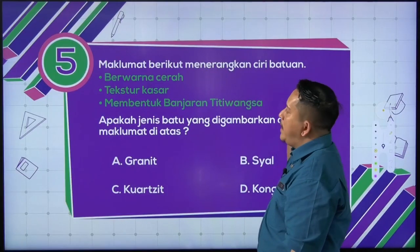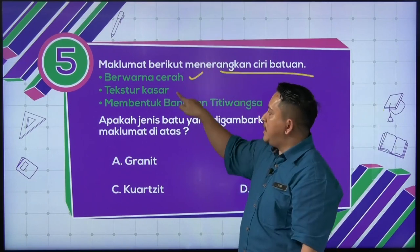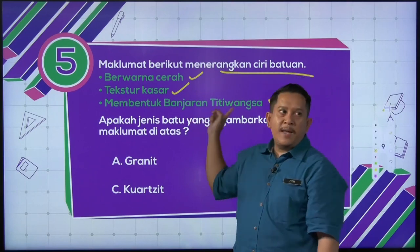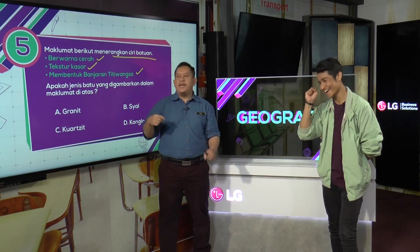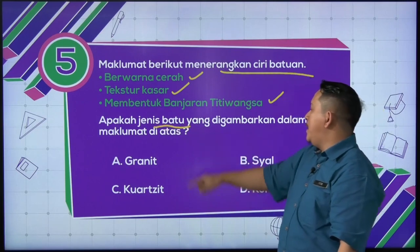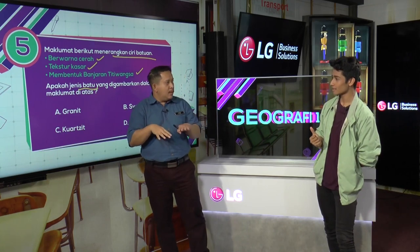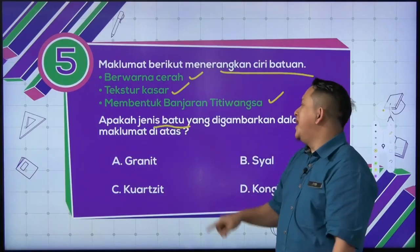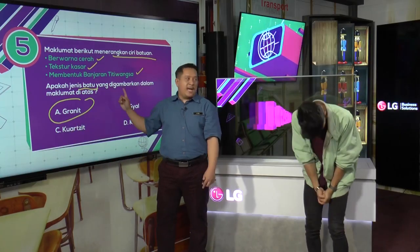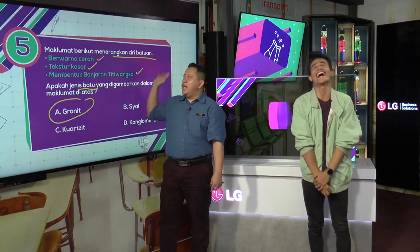Maklumat berikut menerangkan ciri batuan: berwarna cerah, tekstur kasar, membentuk banjaran Titiwangsa. Banjaran Titiwangsa di mana Afiq? Karak. Banjaran Titiwangsa ada terowong tu. Jenis batu ditanya — apa jenis batu? Batu ni orang biasa buat jalan. Keadaan cuaca sekarang panas dan lembab menyebabkan kita suka nak mencari jawapan. Itu 5 soalan.